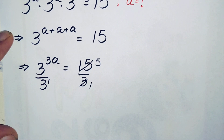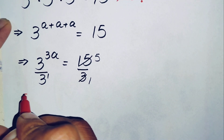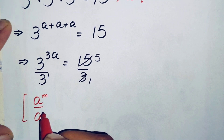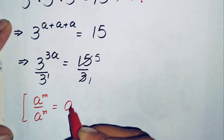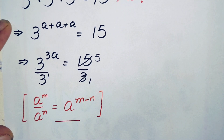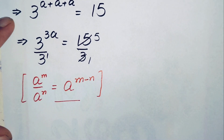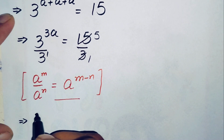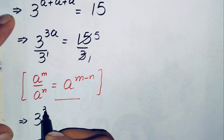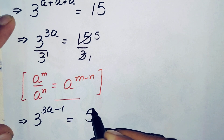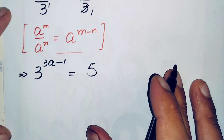Now on the left-hand side we will use an exponential division property. The property states that a raised to power m divided by a raised to power n can also be written as a raised to power m minus n. Applying this property, the left-hand side becomes 3 raised to power 3a minus 1, and this is equal to 5.